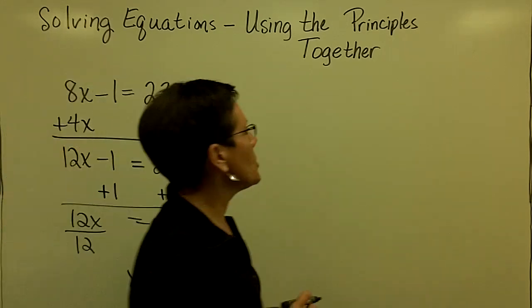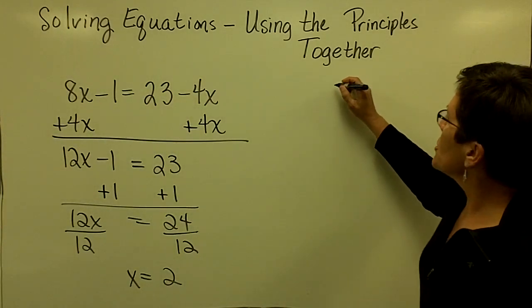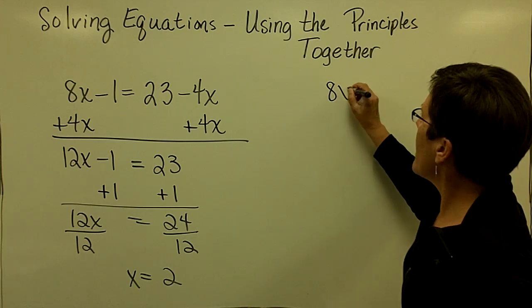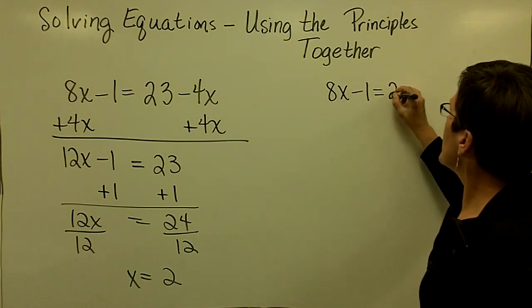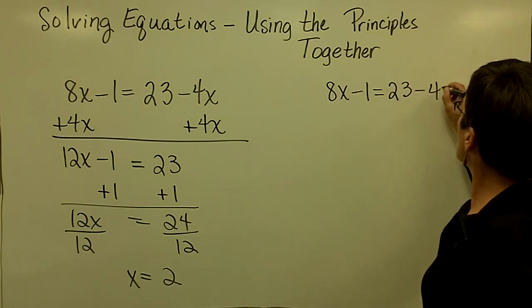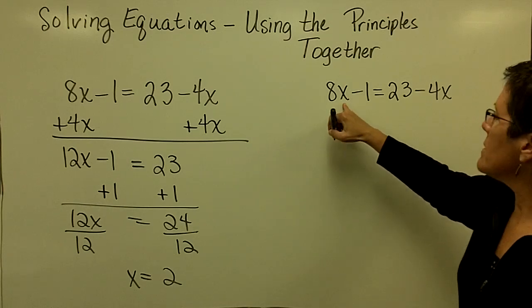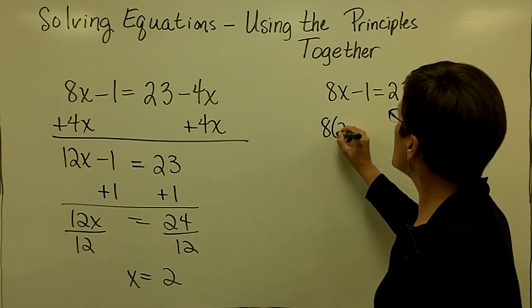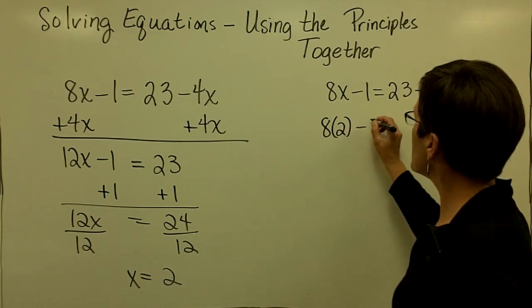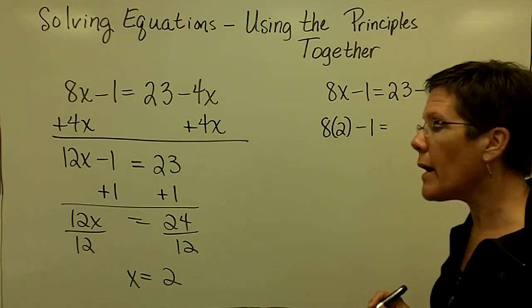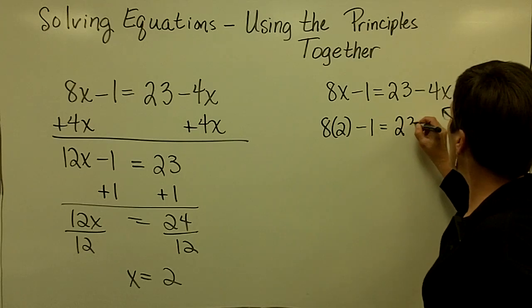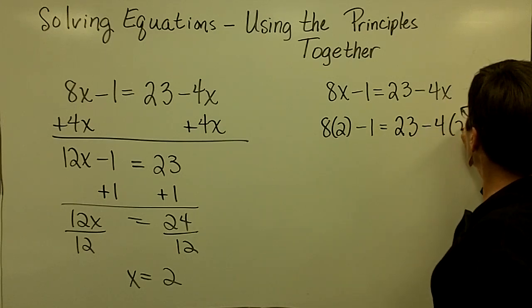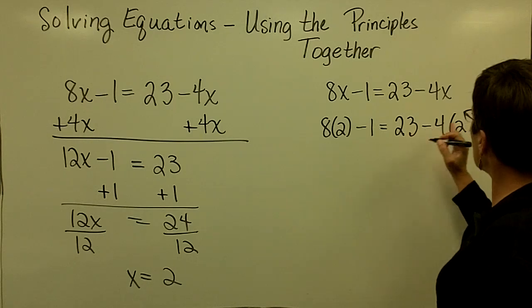In this one, I'm going to go ahead and check it. So my original problem is 8x minus 1 equals 23 minus 4x. So everywhere I see an x, I'm going to put in the value 2. So here 8 times 2 is going to be 16 and then I'll subtract 1 because I'm using order of operations. And then 23 minus 4 times 2, that will be an 8, 23 minus 8.